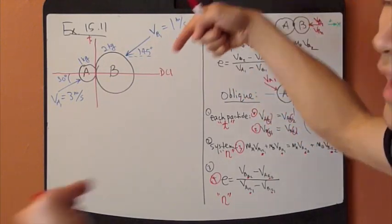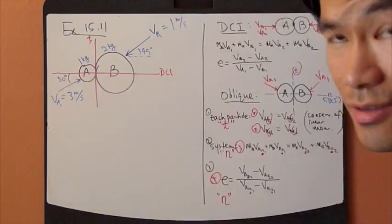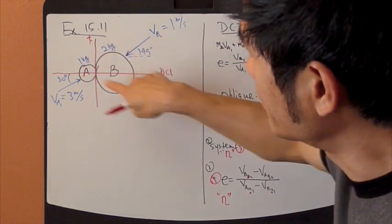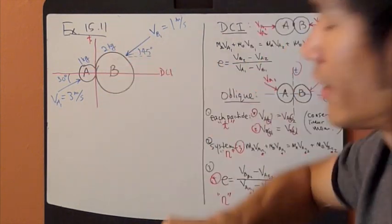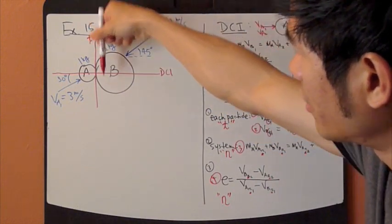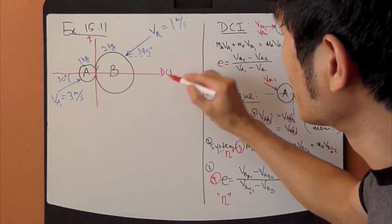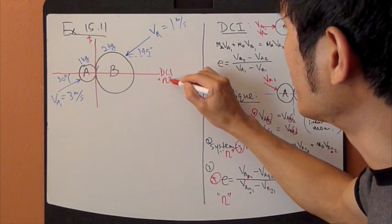Particle B is coming down this way at a 45 degree angle. So they are oblique impact because they are approaching each other in a different direction. So this is the instance where they are colliding each other.